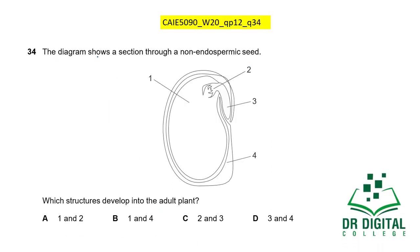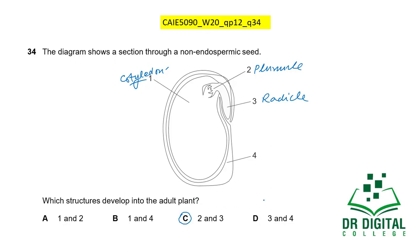In this question, the diagram shows a section through a non-endospermic seed. In a non-endospermic seed, structure 1 is the cotyledon. Structure 2 is the plumule, which forms the future shoot, and structure 3 is the radicle, which produces the future root. So structures 2 and 3 develop into the adult plant. The answer is C.